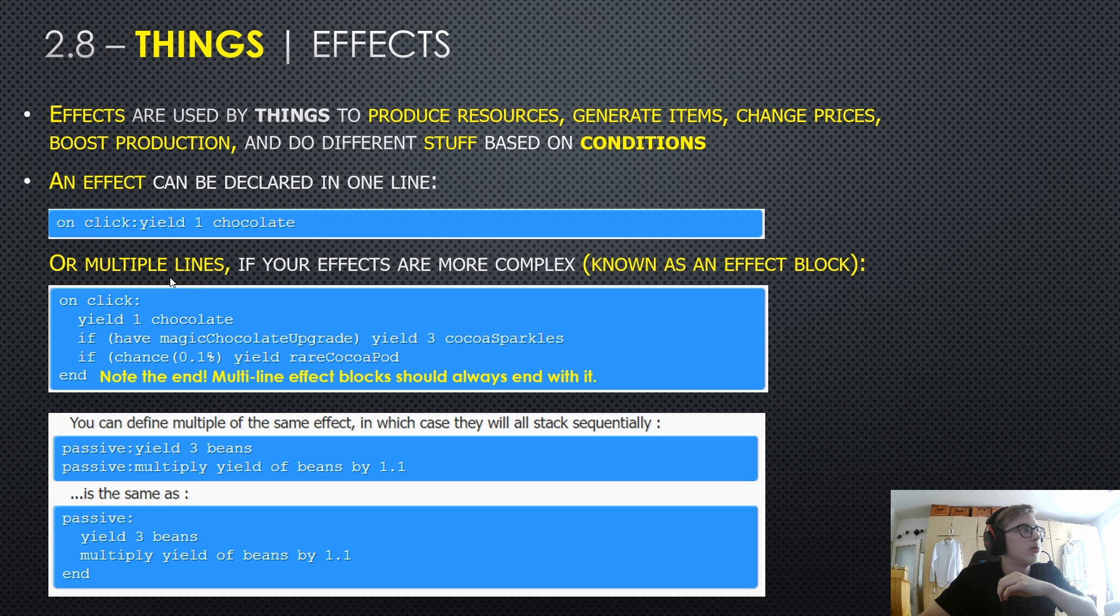Or on multiple lines, if your effects are more complex and this is also known as an effect block. For example, here we can see that if you append this to something and you click it, it will yield you one chocolate.